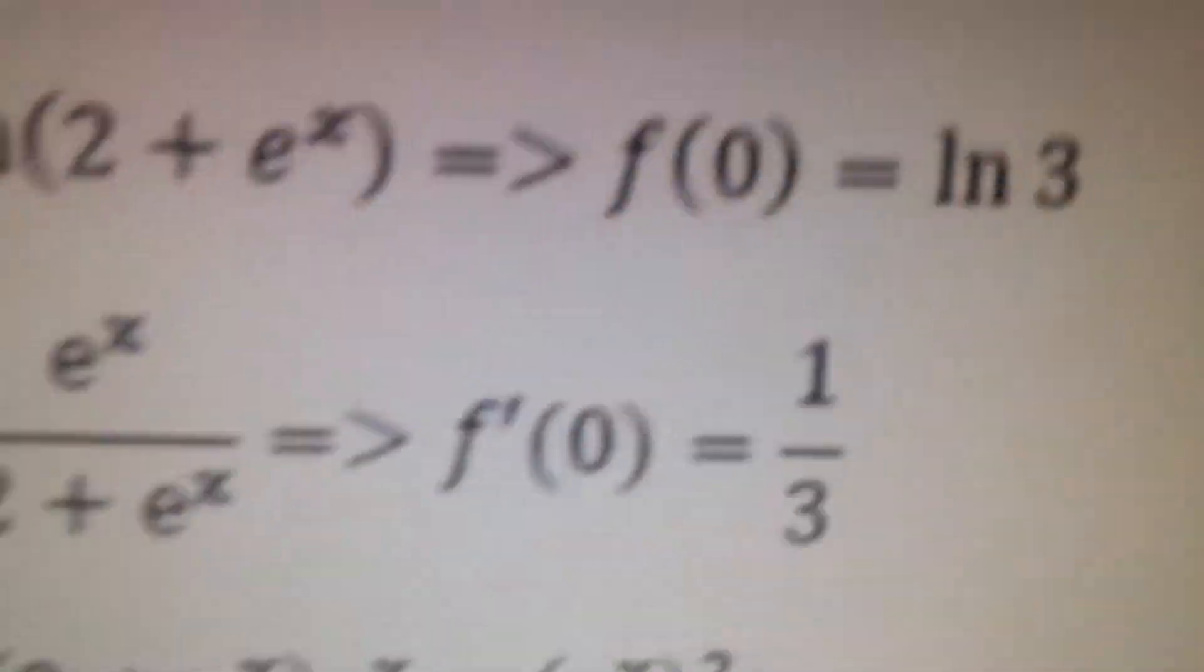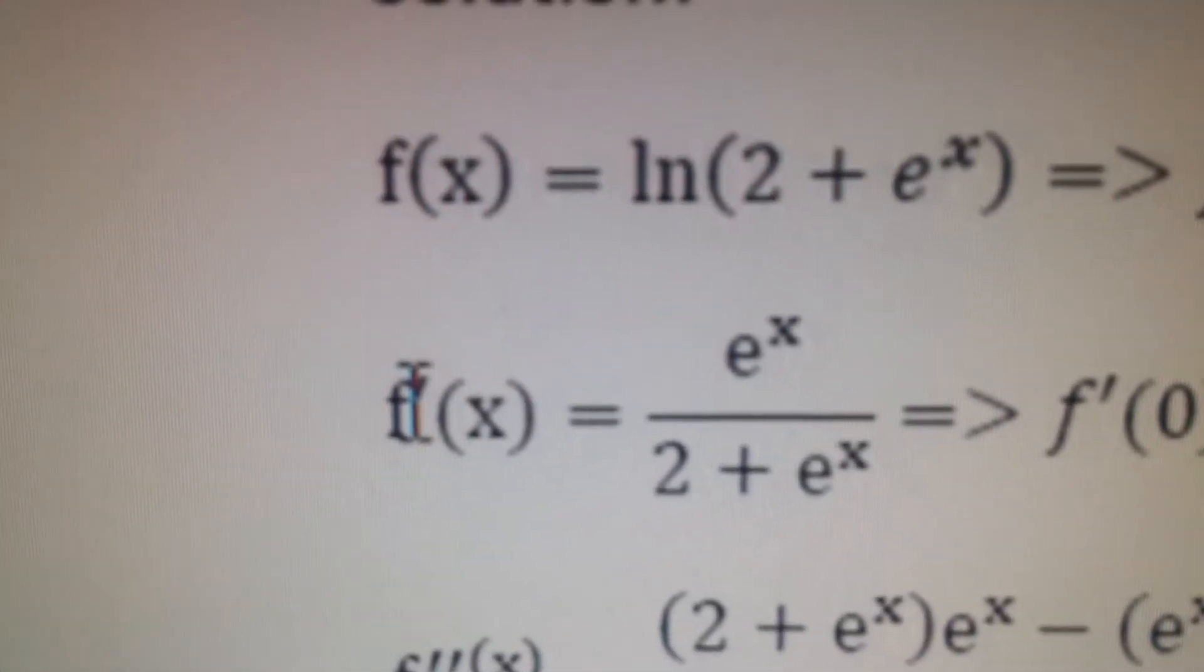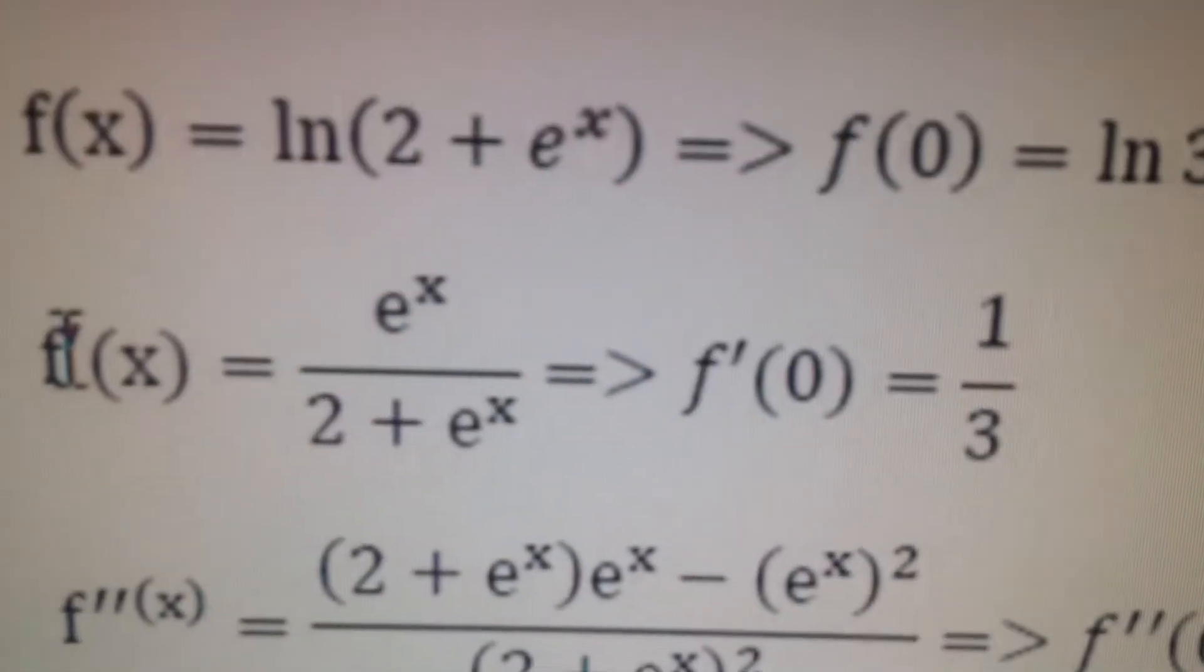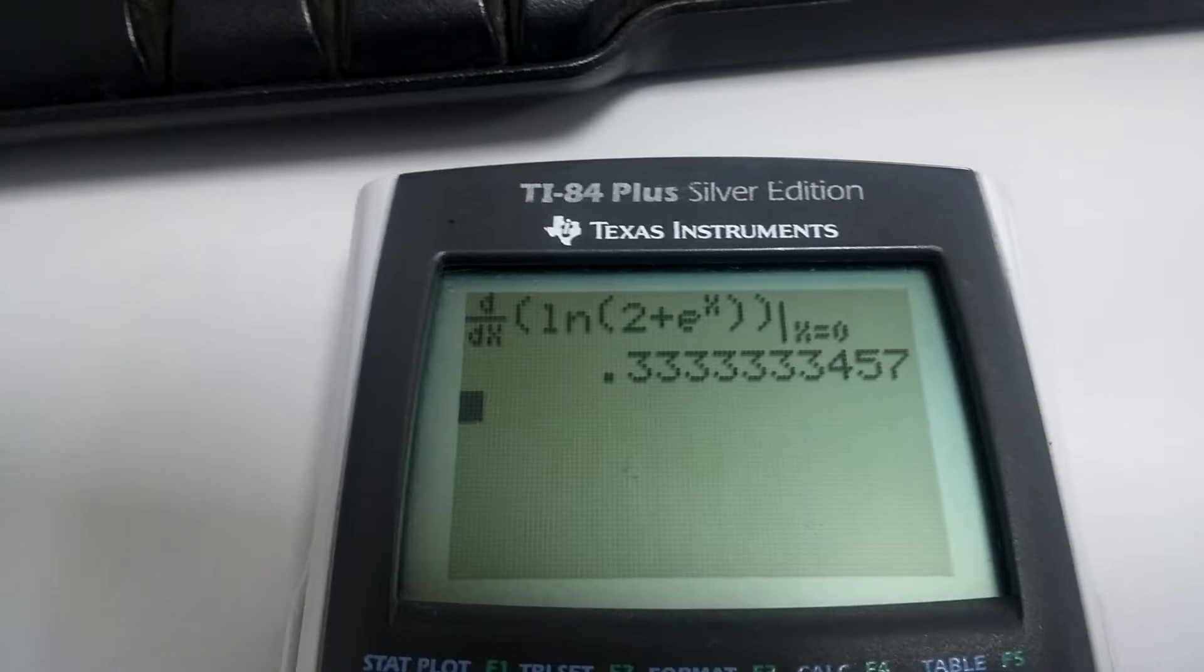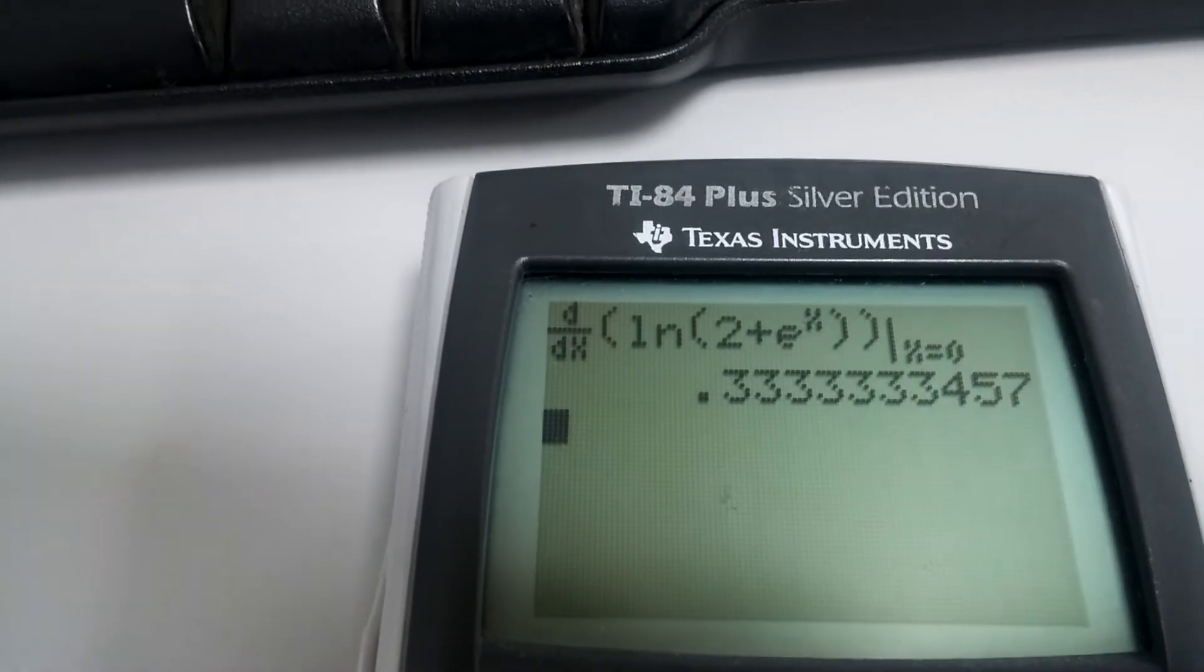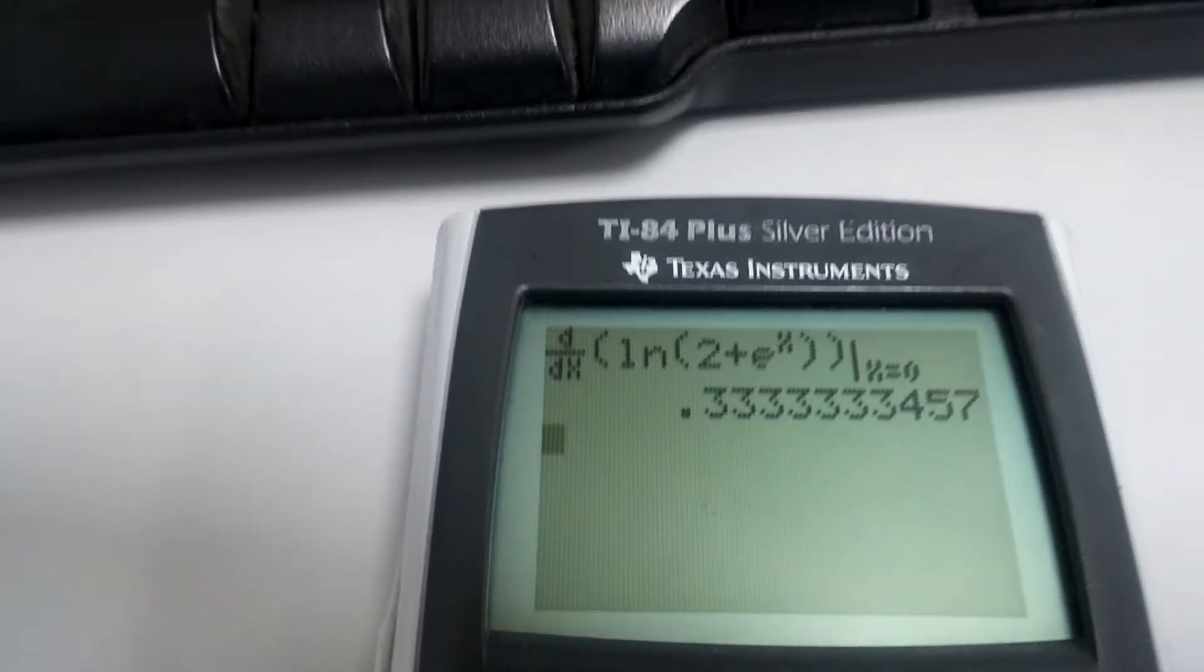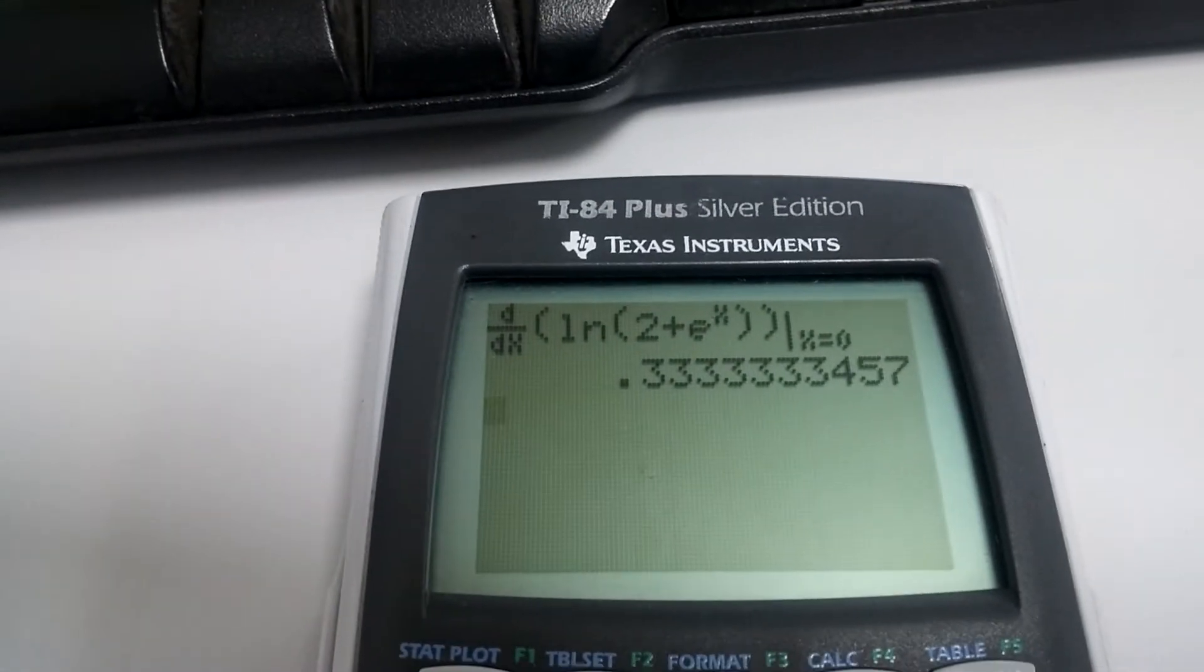and then here, check it at 0. So this should hopefully match this line right here, because we're taking the derivative and we're plugging in 0. So we should hopefully get this, which is 1/3. And you can see it's approximately 1/3. Of course, the calculator is rounding, but you can double-check that. So that's a nice little tip on your exam.